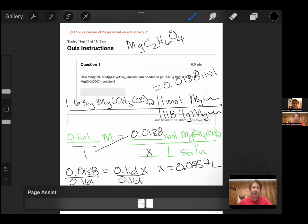We've been asked for milliliters, so make sure to move your decimal point three places to the right to get a bigger number. You should get 85.7 milliliters.